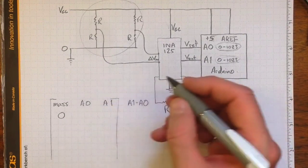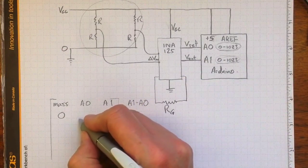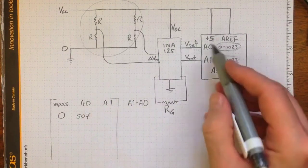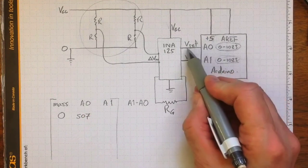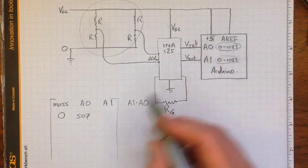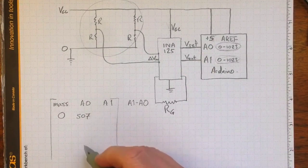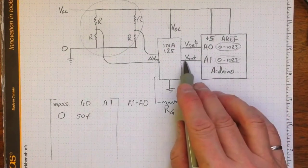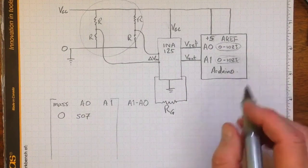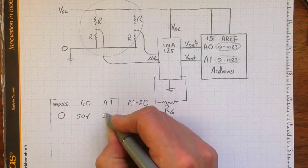So A0 might be 507. That's the reading that we get by comparing the reference voltage of about 2.5 volts to plus 5. It's about halfway in between. And we measure the output voltage, converted to a digital value, we might wind up with 523.